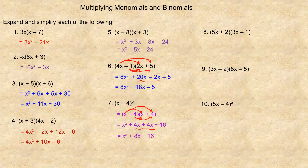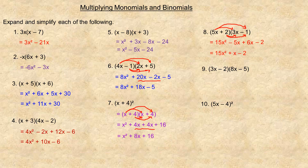For number 8, 5x times 3x is 15x squared. Then 5x times negative 1 is minus 5x, and 2 times 3x is 6x, and 2 times negative 1 is minus 2. Combining the like terms: negative 5x plus 6x is positive 1x. The final answer is 15x squared plus x minus 2.